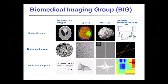That's the team. The group does a variety of things — we're interested in medical imaging, biological imaging, doing theory, and we have a variety of tools: splines, wavelets, stats, mathematical imaging. These are just cartoons. That's the famous Shepp-Logan, which you can't escape if you're doing MRI reconstructions.